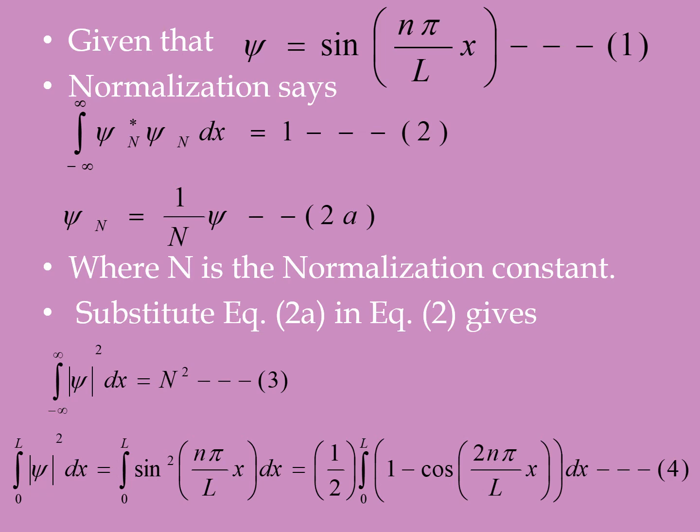The integral from minus infinity to plus infinity of |psi|² dx equals N². Substituting the value of psi, it becomes the integral from 0 to L of sin²(nπx/L) dx. This sin² term can be written as (1 - cos2x)/2.